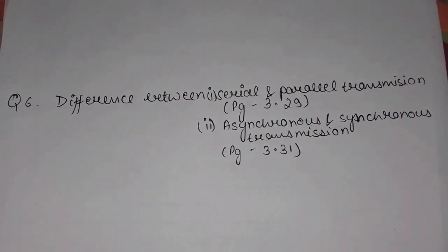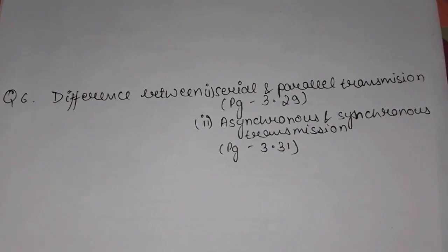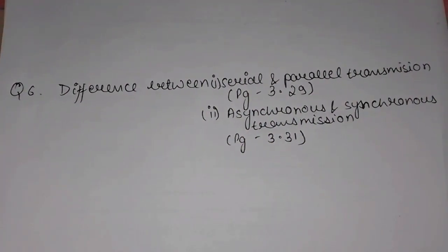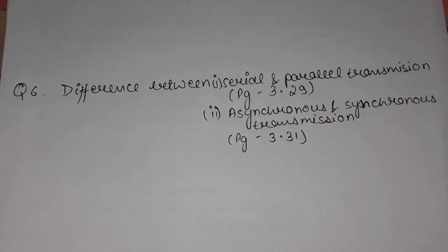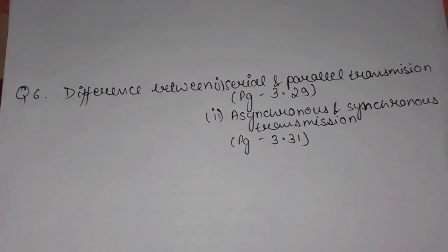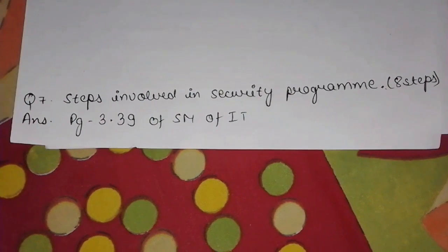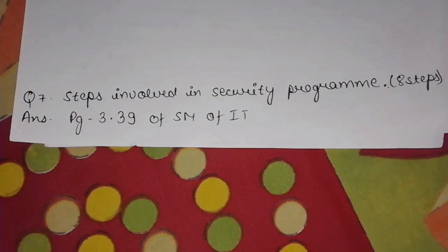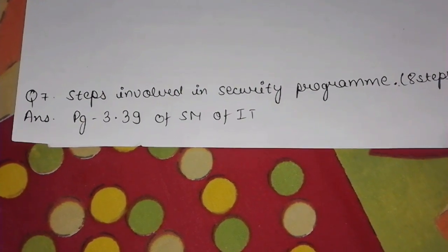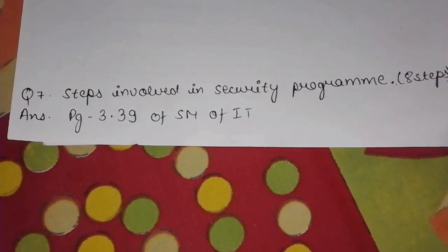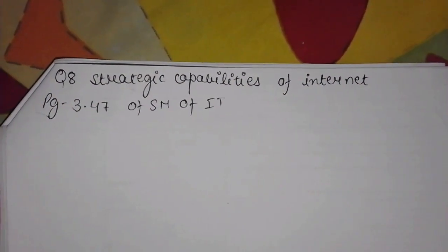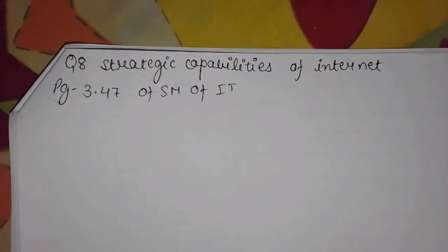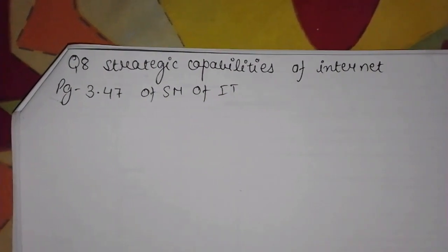Question 6 is Difference between Serial and Parallel Transmission. Its answer can be found on Page 3.29 of the Study Material of IT. Question 7 is Steps Involved in a Security Program — there are 8 steps in this answer. Answer on Page 3.39. Question 8 is Strategic Capabilities of Internet, answer on Page 3.47 of the Study Material of IT.